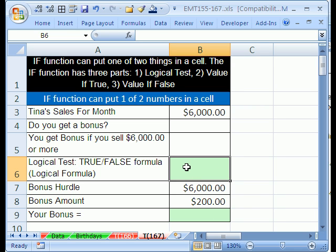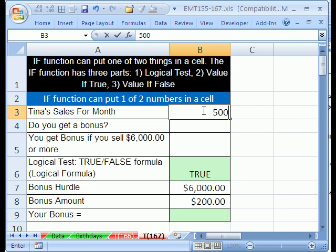Let's go ahead and look at a true-false formula first. Equals, and you ask the question, are Tina's sales greater than or equal to the hurdle? Control-Enter. That's true. Let's change her sales to 5,000. False. So it comes out true or false.